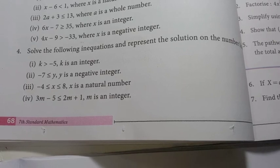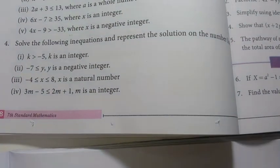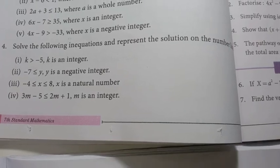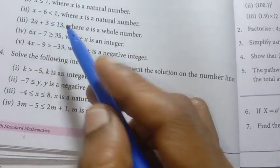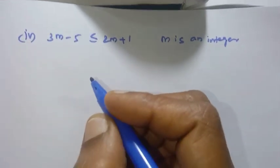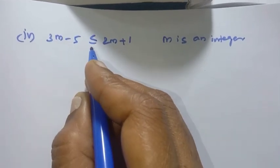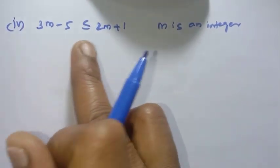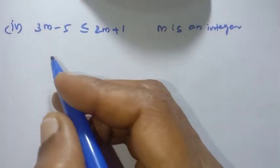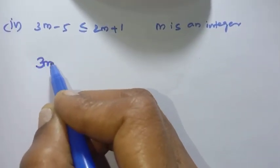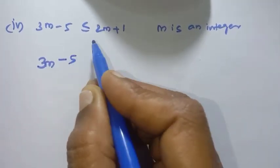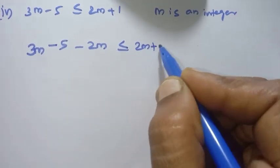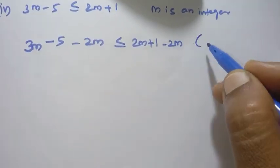Next: 3m minus 5 less than or equal to 2m plus 1, where m is an integer. Using the method from the last video — when you add or subtract on both sides the inequality does not change. We subtract 2m from both sides: 3m minus 5 minus 2m, and 2m plus 1 minus 2m, keeping them separate.